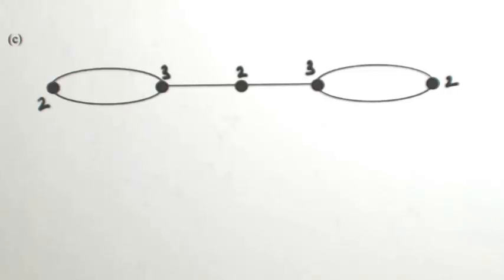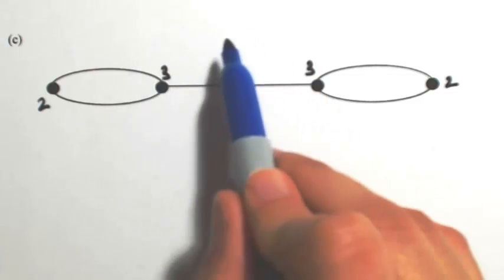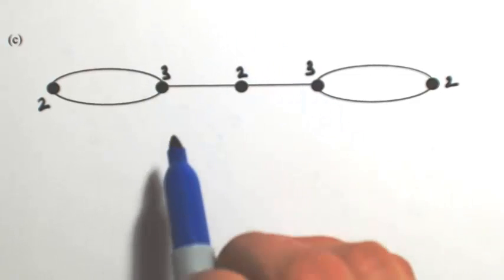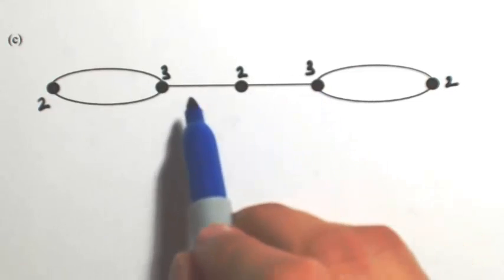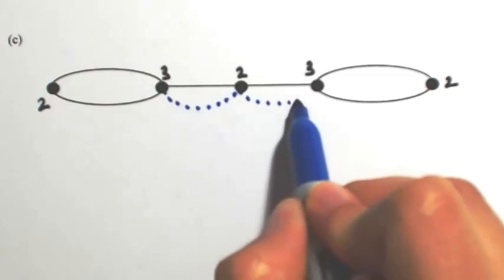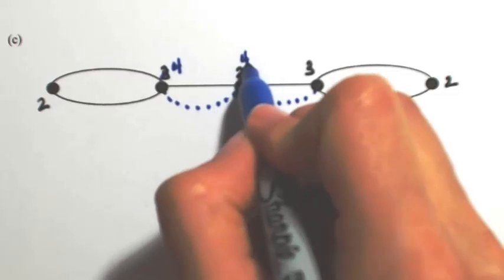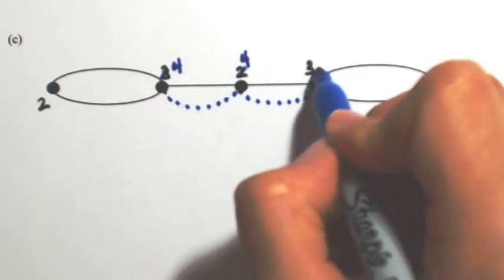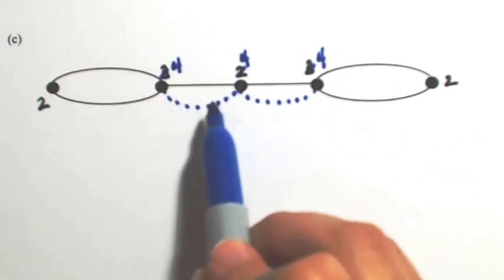What I want to do is connect those odd degrees together, but again I can't just jump over and connect because there is no edge doing that. So what I'm going to do is jump through the two to get to the other three. Then the three becomes a four, the two becomes a four — I went in and back out — and the three becomes a four. So now every degree is even, and we end up reusing two edges.